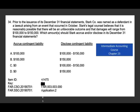The next question is from chapter 13. Prior to the issuance of its December 31st financial statements, Stark company was named as a defendant in a lawsuit arising from an event that occurred in October. Stark's legal counsel believe it is reasonably possible that the outcome will be unfavorable and that damages would range from $100,000 to $150,000. Which amount should Stark accrue and/or disclose in its December 31st financial statements?